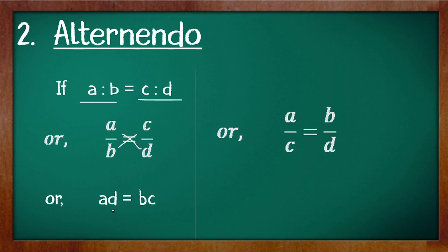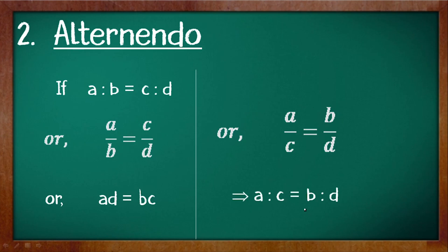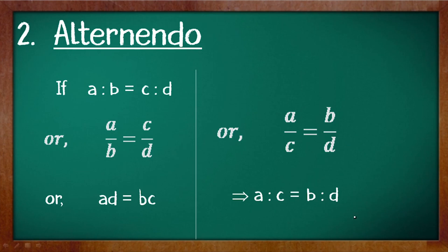After that, we bring the c part onto the left hand side and take d onto the right hand side, giving us a by c is equal to b by d. Basically we are interchanging the positions of b and c. Writing this in ratio form we have a is to c is equals to b is to d. The consequent of the first ratio is interchanged with the antecedent of the second ratio. This property is known as alternando.